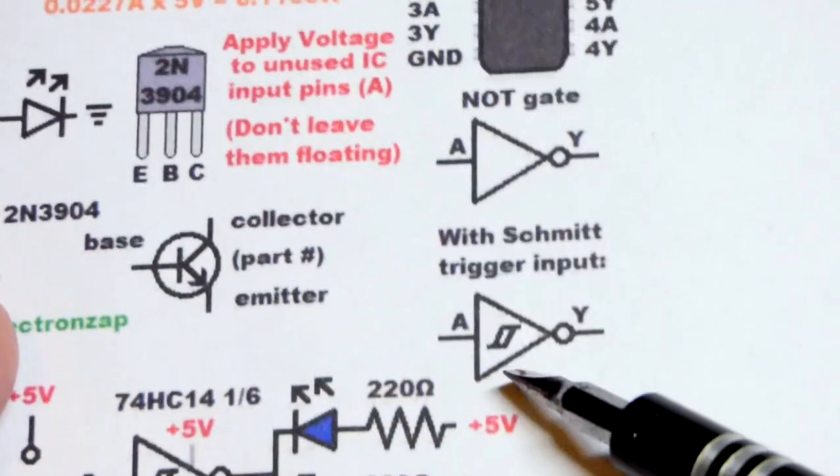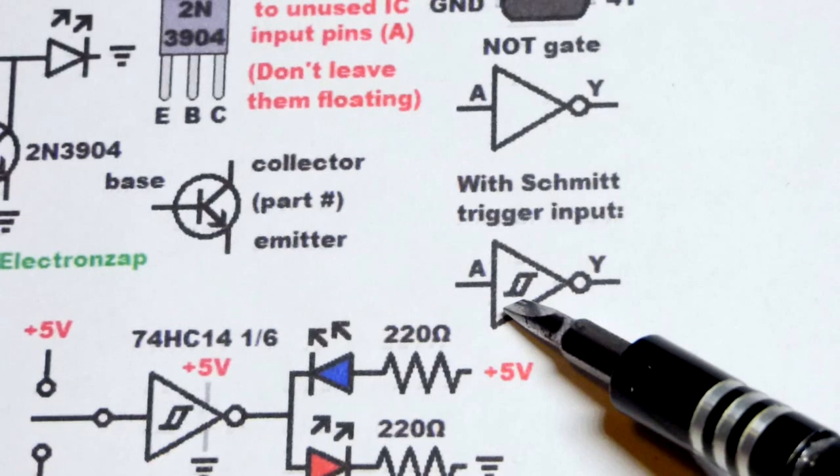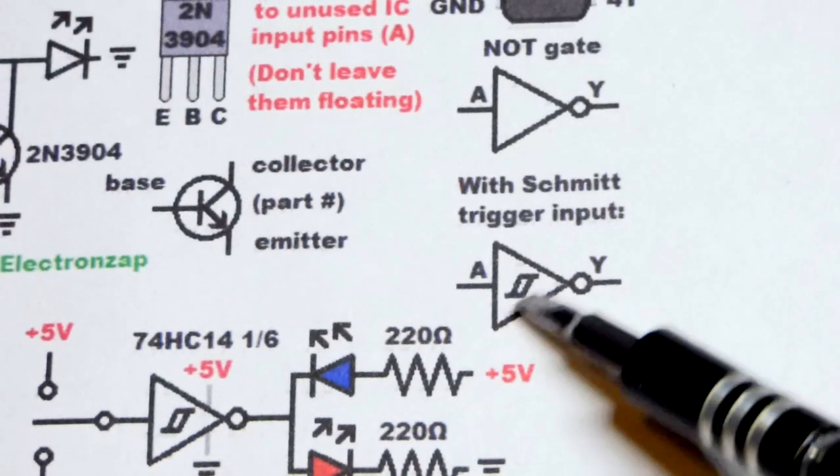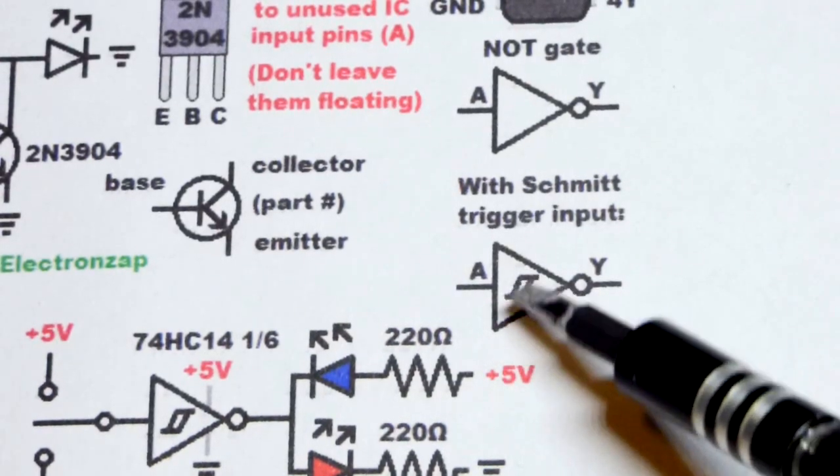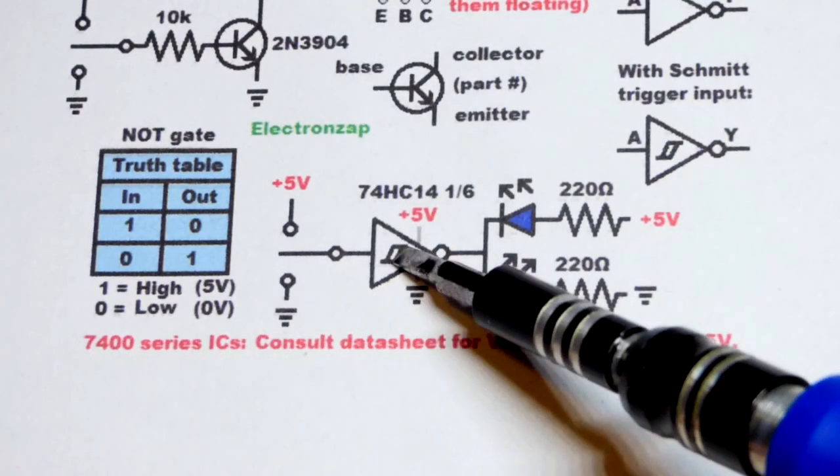We said Schmitt trigger before. If you look at a schematic for one of these logic gates, and it's a Schmitt trigger, you'll see a symbol that looks like this within it. Here is a schematic diagram of the circuit that we looked at.